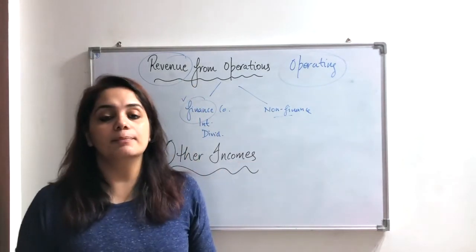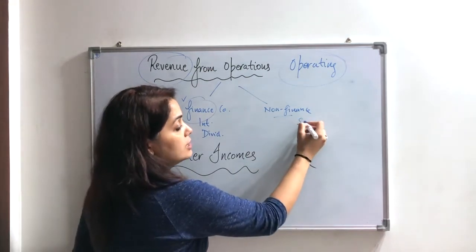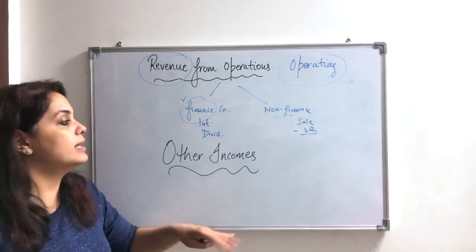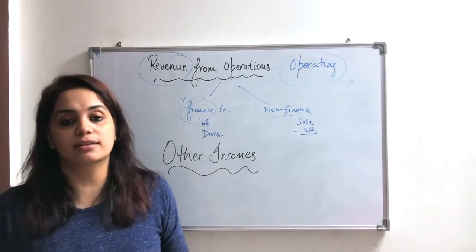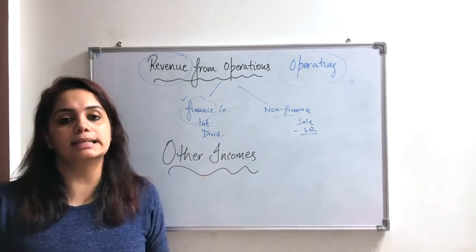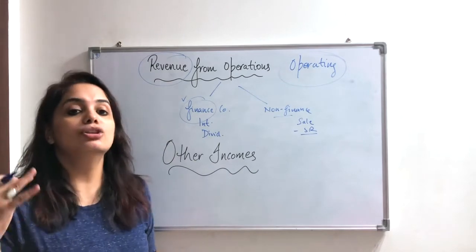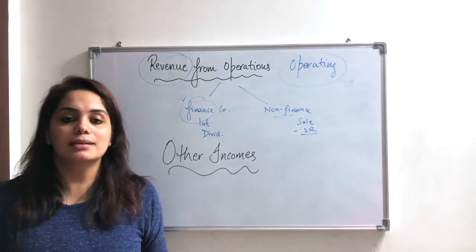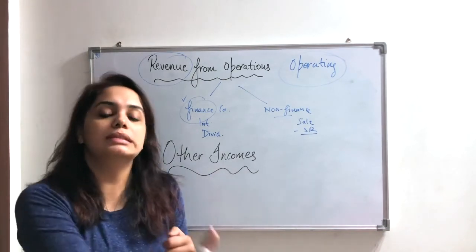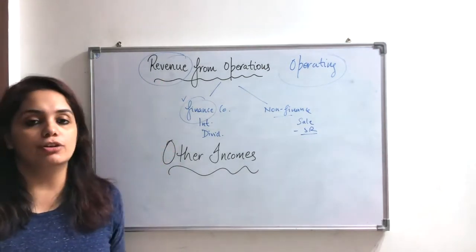And for a non-finance company — manufacturing or trading — their revenue comes from selling. Sales minus sales return, and also the sale of scrap — all these things are revenue from operations for a non-finance company. Because the profit is earned from the sale. They are selling goods and earning money. And the finance company earns money by providing loans to customers or companies and receiving interest. So all these things are revenue from operations.